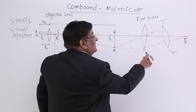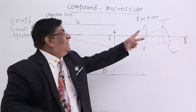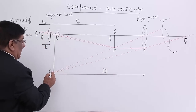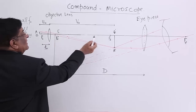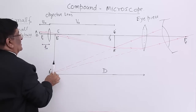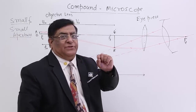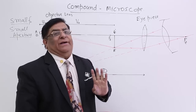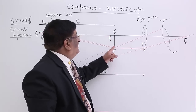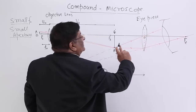When I put my eye here, I see one ray coming from this direction and another from this direction. Where the two rays appear to meet, I see the image — I call it A double dash. Draw a perpendicular because B dash forms its image on the principal axis. So A double dash, B double dash is the image formed by the eyepiece. This eyepiece is set as a simple microscope for distinct vision.